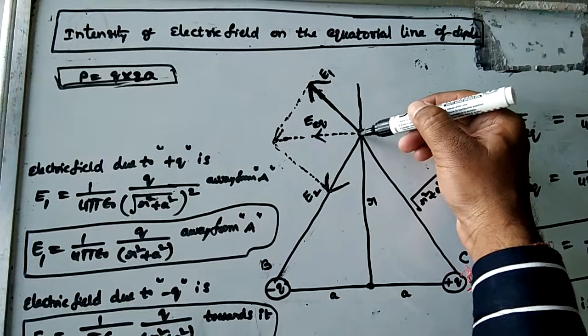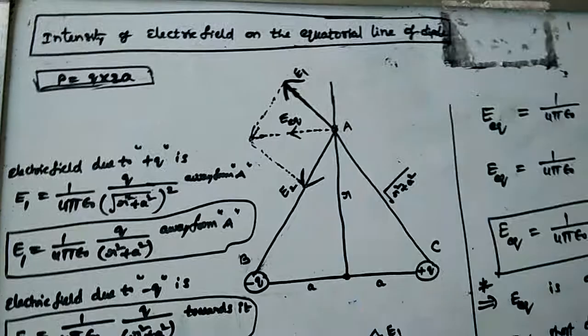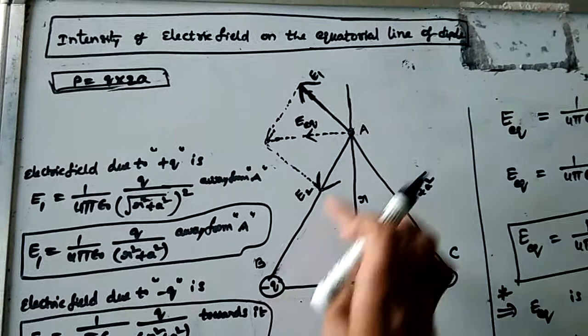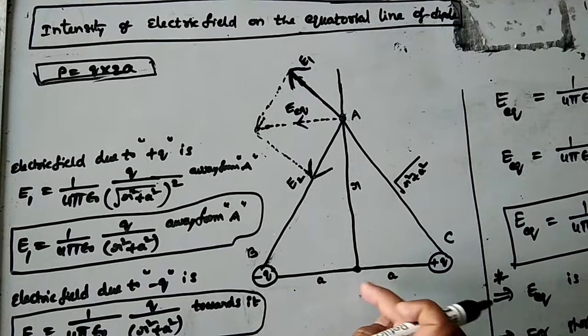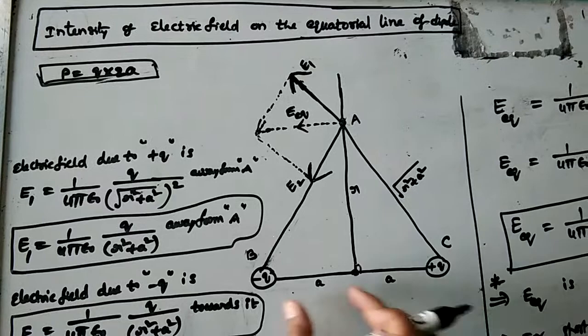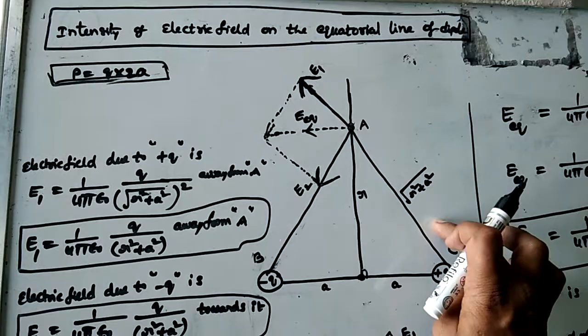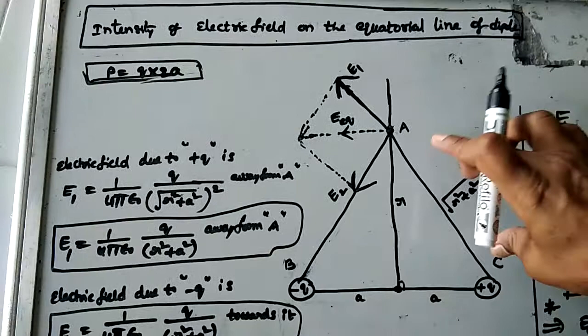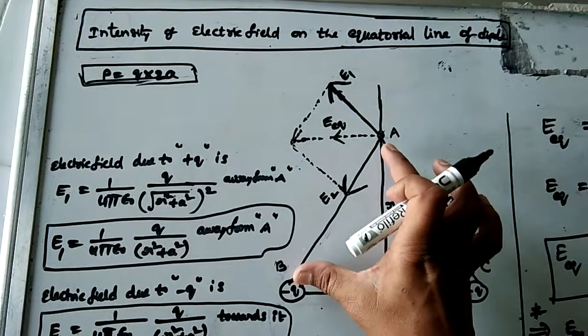There is a point A which is at a distance r from the center. At this point, the positive charge and negative charge both produce electric fields. The length of the dipole is 2a, and the perpendicular bisector divides it equally into a and a. The perpendicular distance from either charge to point A — using Pythagoras' theorem — is the square root of r squared plus a squared.